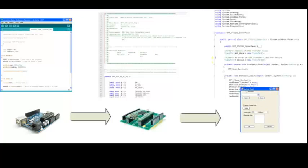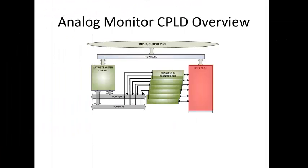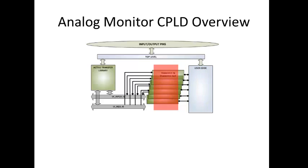Now let's start on the analog monitor CPLD code. The EPT570P will accept the digitized data sampled by the Arduino and transfer it to the PC. The active transfer library is used to send the data to the PC through active transfer end terms, which connect the active transfer library to the user code. This makes it easy to transfer data to and from the PC via USB. The user needs to create a state machine to control the transfer between the incoming data and the active transfer end terms. All of the code here is written in Verilog.